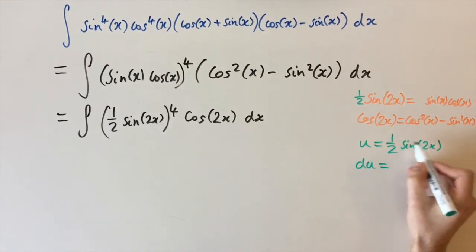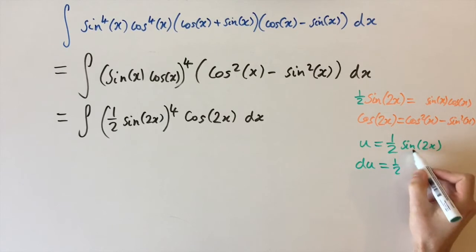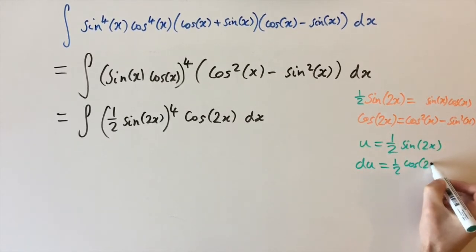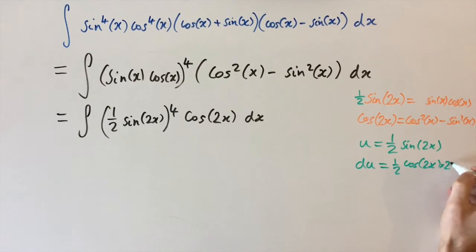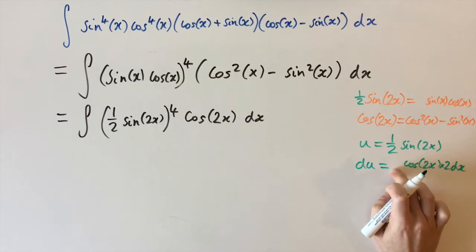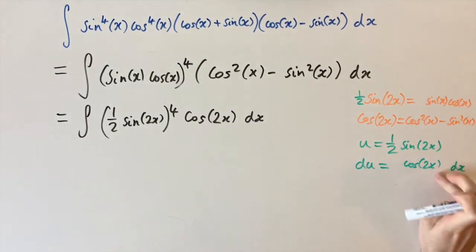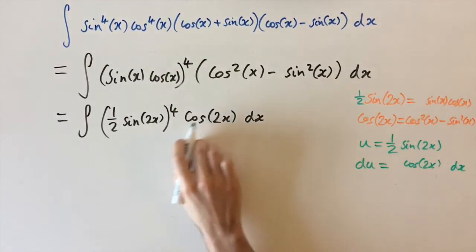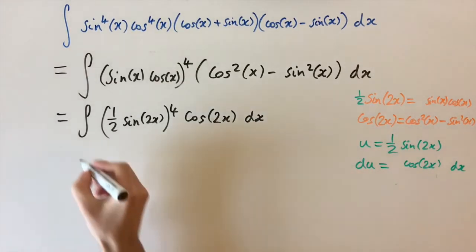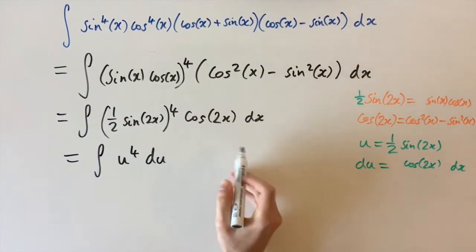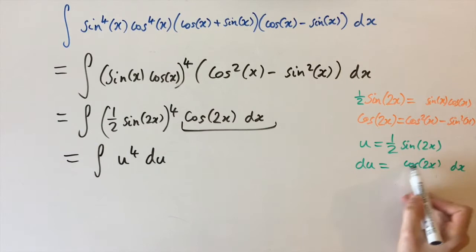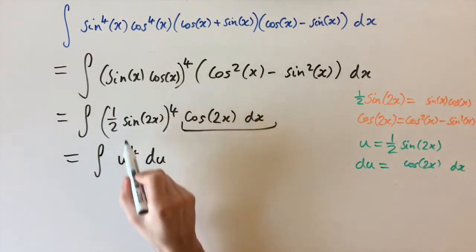If we differentiate u, we have du equals half times the derivative of sine, which is cosine, so we have cosine 2x. Then using the chain rule we differentiate inside the bracket — the derivative of 2x is just 2 — so we get another 2 on the front, which cancels with the half. So du equals cosine 2x dx, which is exactly this term. We get a very nice substitution: this integral becomes just the integral of u to the power of 4 du, because cosine 2x dx is replaced by du and the bracket is replaced by u.